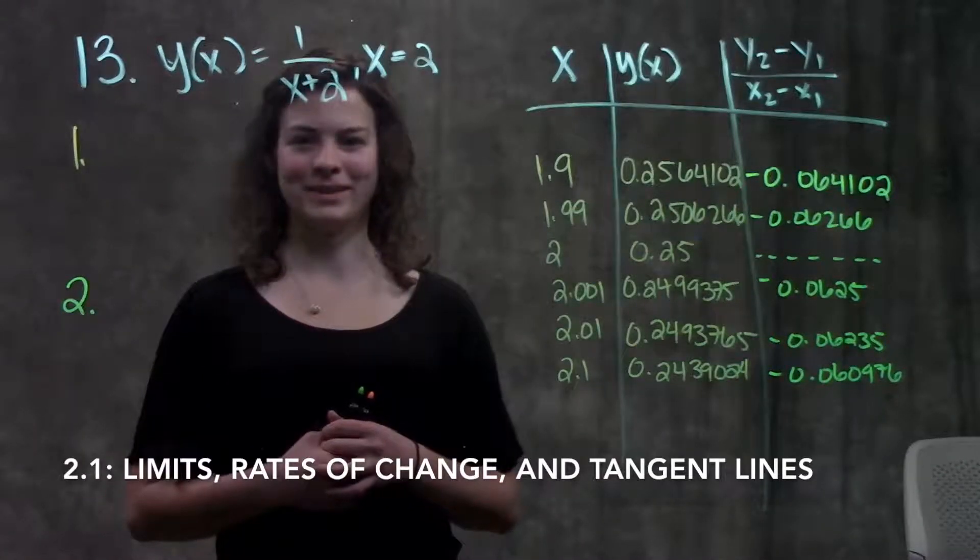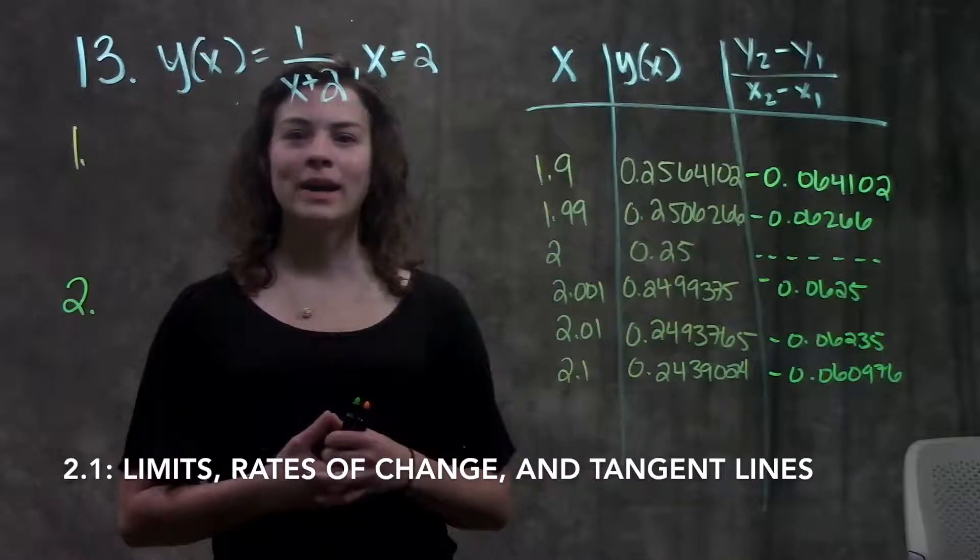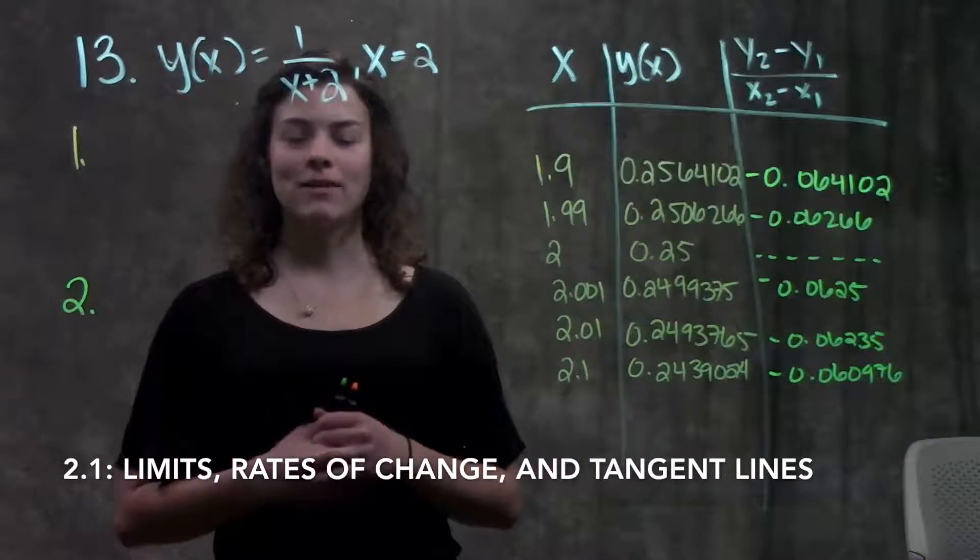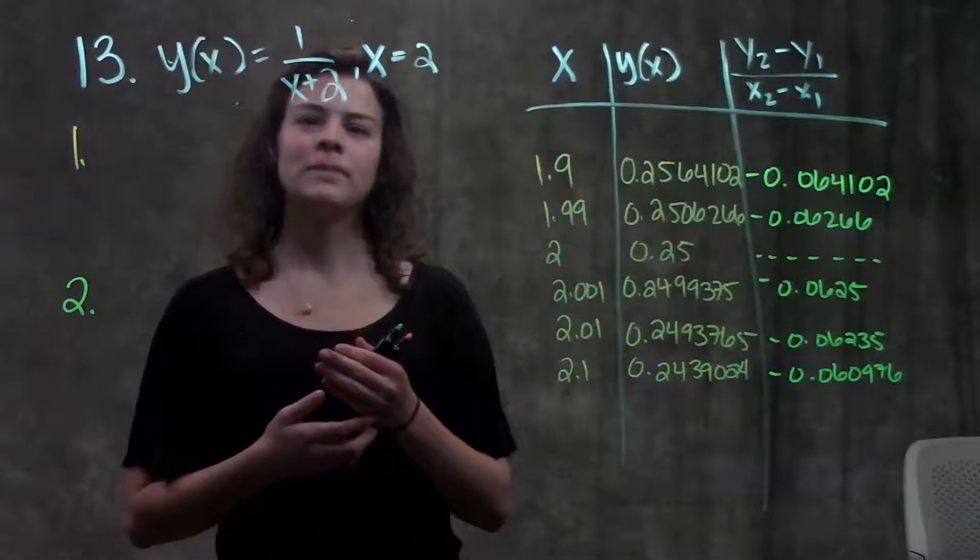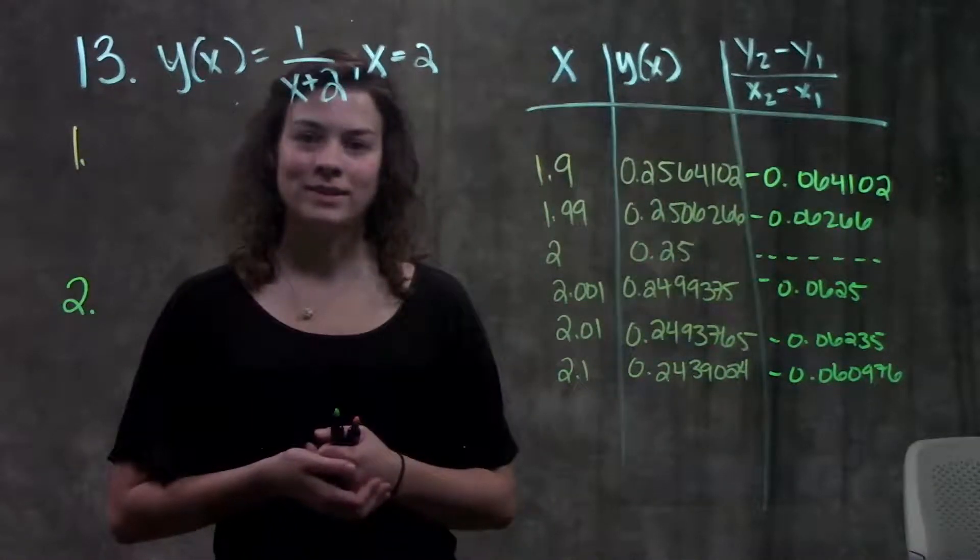This is section 2.1 on limits, and in this video we're going to go through how to estimate the slope at a given point of interest. We're going to go through number 13 in your book. It gives us this equation and it's interested at the value x equals 2.